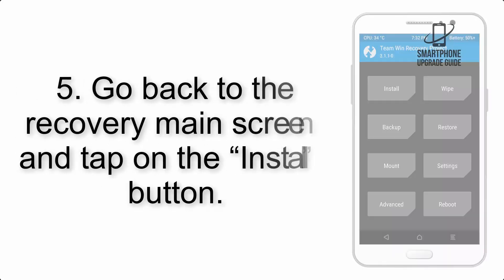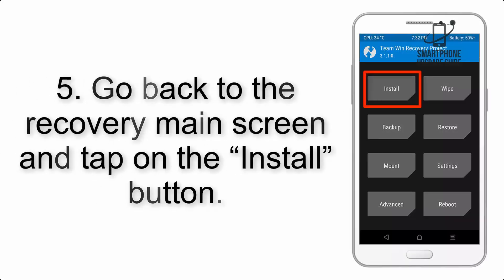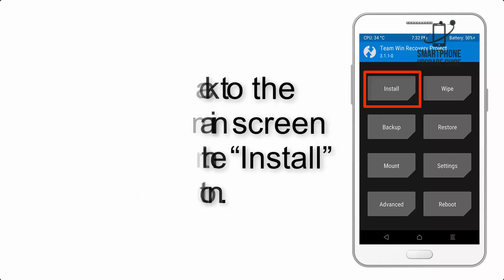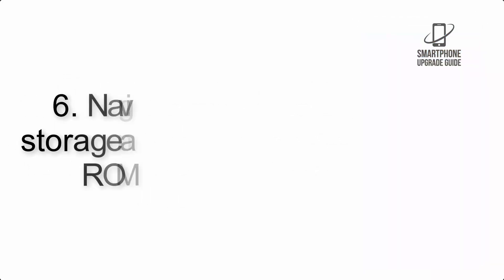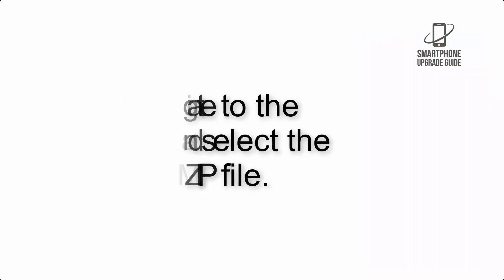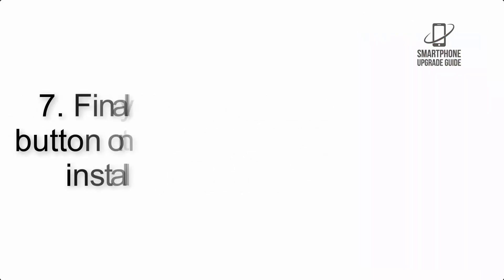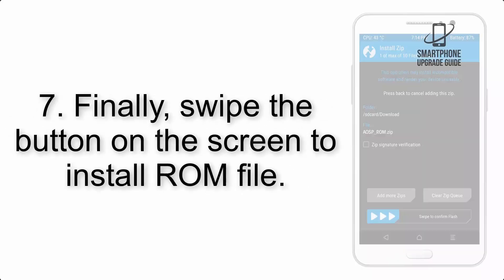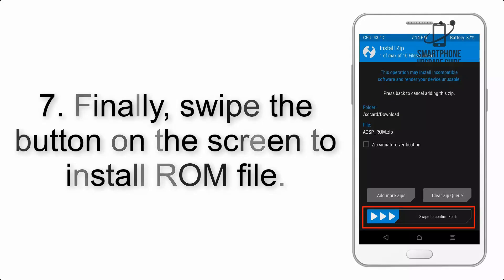Step 5: Go back to the recovery main screen and tap on the Install button. Step 6: Navigate to the storage and select the ROM zip file. Step 7: Finally, swipe the button on the screen to install the ROM file.